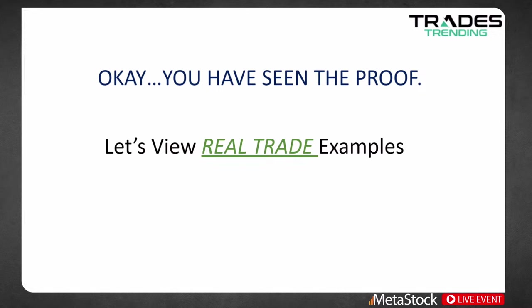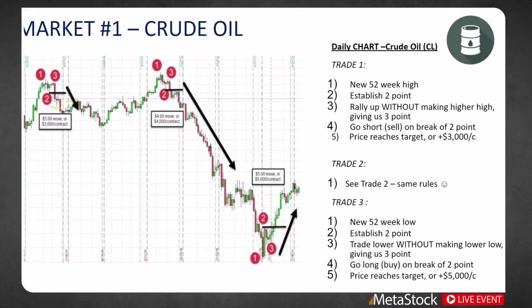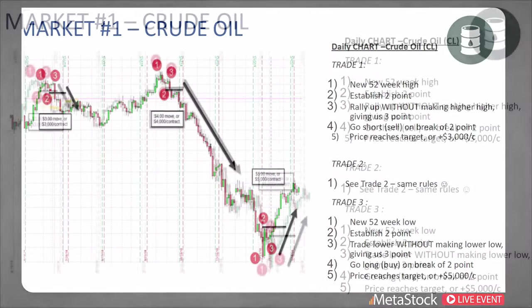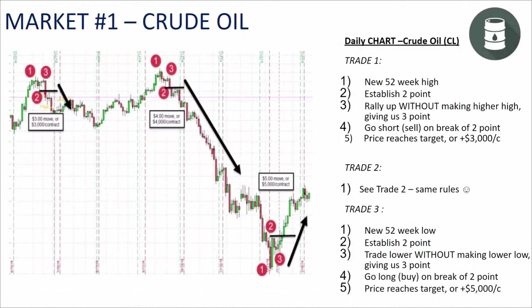Let's view some real trade examples used in our services. This is a daily chart of crude oil with three examples. Here we have a 52-week high indicated by the red circle number 1. We have a very small, compressed 1-2-3 top, and then we get a break and close below that number 2. We get a retest, and it meets our $3,000 per contract objective. Remember — your target is the distance between the high of the 1 measured to the low of the 2, measured down. We reach our target objective and then go sideways.